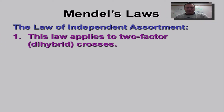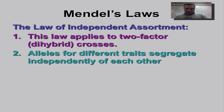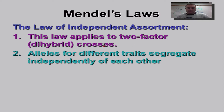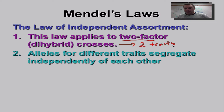Independent assortment says that the alleles for different traits will segregate independently of each other. This is only going to be used in a two-factor dihybrid cross. 'Di' means two, so what we're doing here is looking at two traits at once.